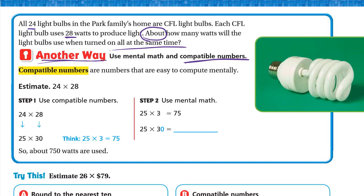Here is another way to estimate: using mental math and compatible numbers. Compatible numbers are numbers that are easy to compute mentally — usually they end in zeros or are 25, 50, or 75. To estimate 24 × 28 using compatible numbers: 24 is really close to 25 and 28 is close to 30. So we multiply 25 × 30. We put the 0 in the product and compute 25 × 3 = 75, so it's 750 watts.